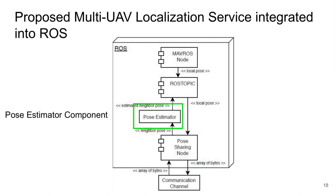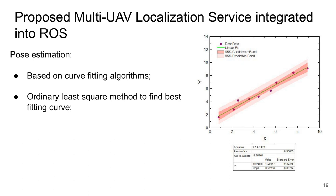To solve this problem, our work proposes the use of a pose estimation component. This component, through the known mission plan and the speed at which the vehicle moves, can estimate the pose of its neighbors based on a smaller amount of pose messages previously received. This makes it possible to avoid gaps in positioning and keep vehicle pose visibility constant even when communication errors occur. The pose estimation method is based on curve fitting, using the least squares method to find the best fitting curve with minimum deviations from all data points.